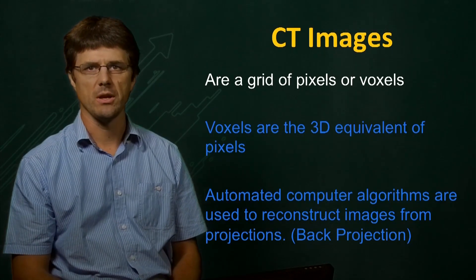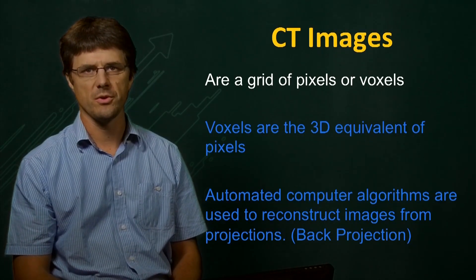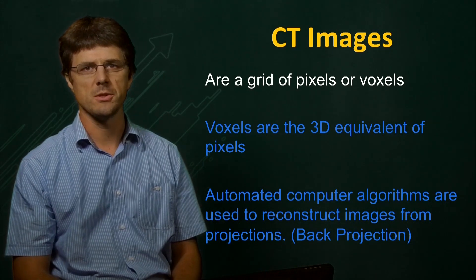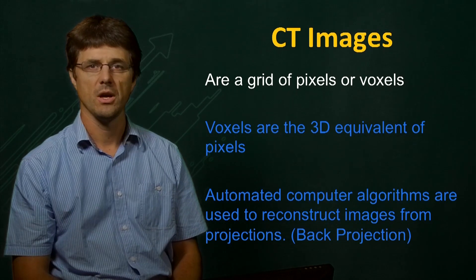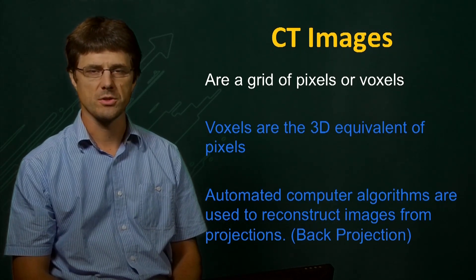In order to demonstrate how we can now reconstruct projections, we will first need to recognize that CT images are represented as a grid of pixels, or voxels. Voxels are the three-dimensional version of pixels. Back projection algorithms treat images as a discrete set of voxels in order to perform the reconstruction.